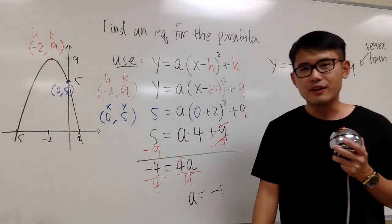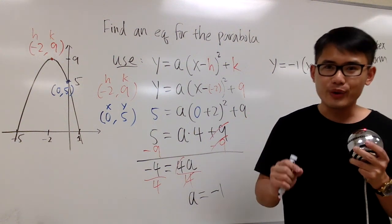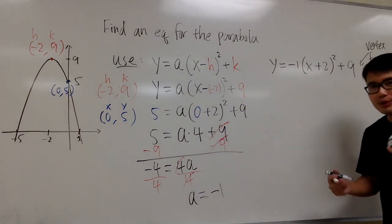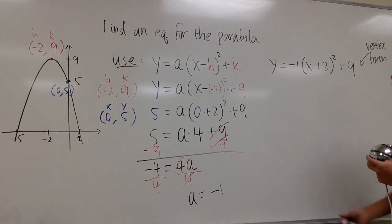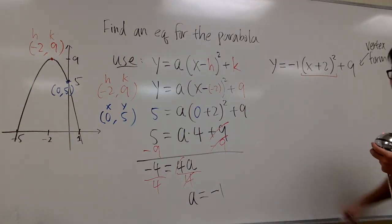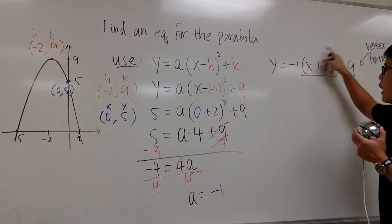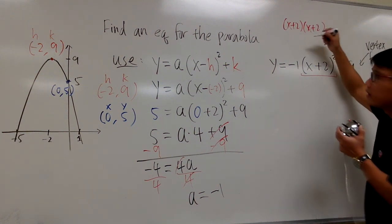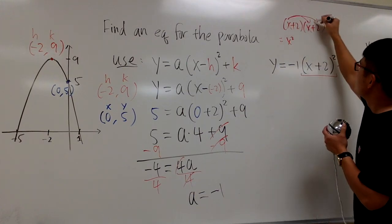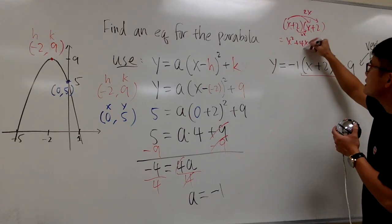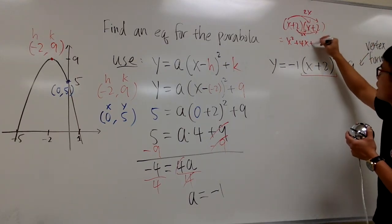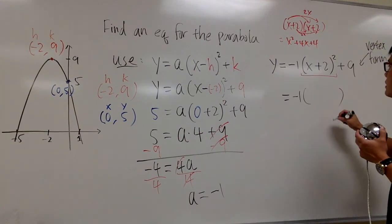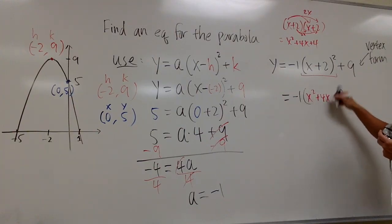I will also show you how we can get the standard form. For the standard form, keep in mind, it is going to be ax squared plus bx plus c. So to get standard form, it's pretty straightforward. Once we have the vertex form, all we have to do is multiply out this part and combine like terms after that. Be sure you don't distribute the negative inside, because we have to do the powers first. So let me write it down: x plus 2 times x plus 2. x times x is x squared, x times 2 is 2x, and 2 times x is 2x — together that's plus 4x. And the last one, 2 times 2, is plus 4.